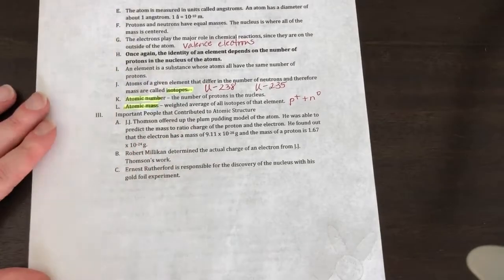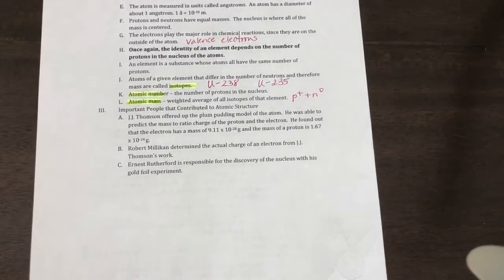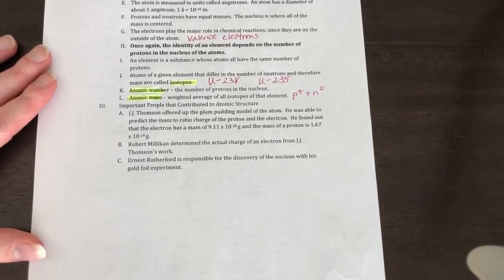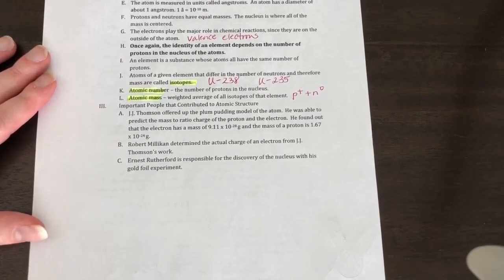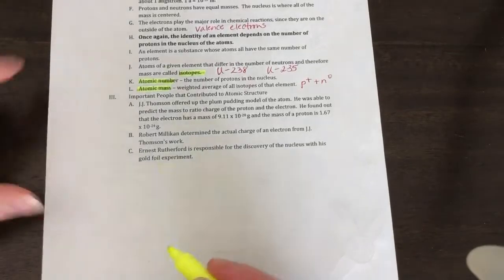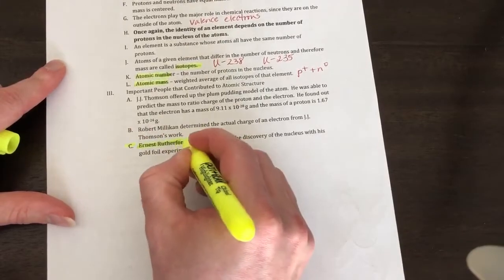I need to correct that. But anyways, you got someone called Robert Milliken. He determined the actual charge of an electron from JJ Thompson's work. And then Ernest Rutherford. This is important. You need to know him. This is on your test.